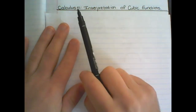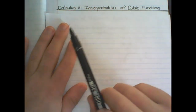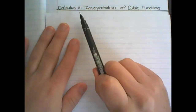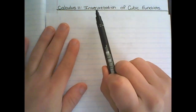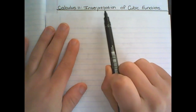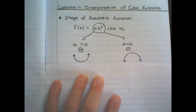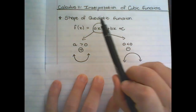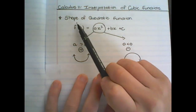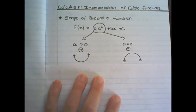This is our eleventh lesson on calculus, and in this lesson we are going to work on the interpretation of cubic functions. Before we move on to the shape and interpretation of the cubic function, let's just revise the shape of a quadratic function.